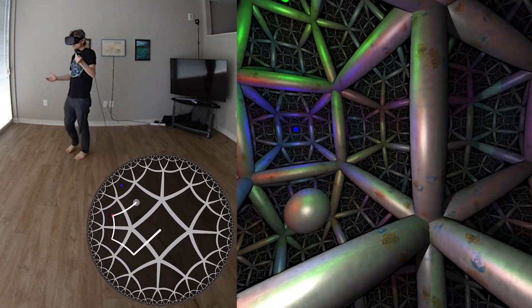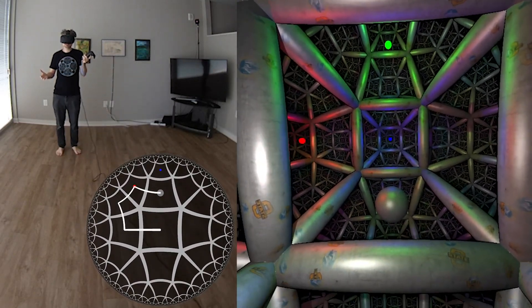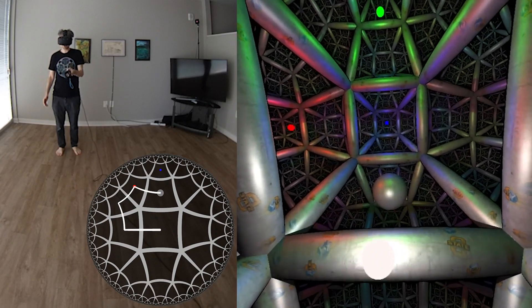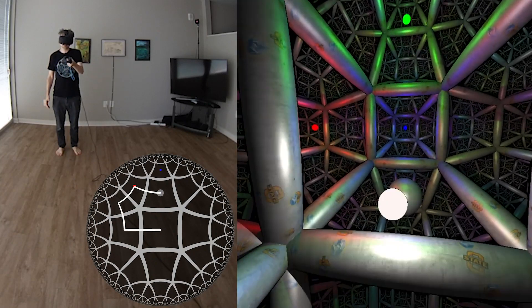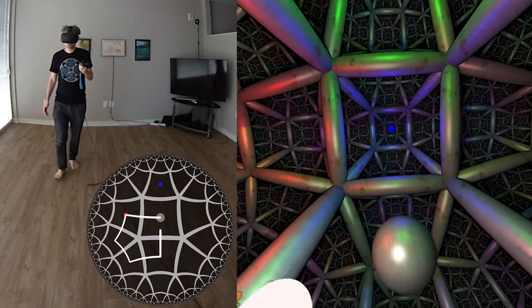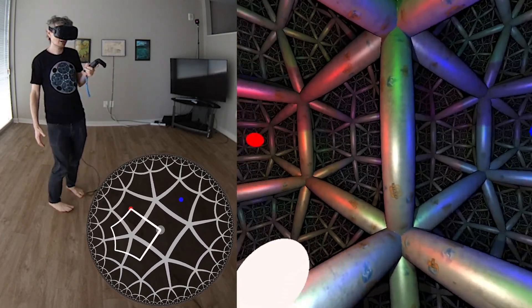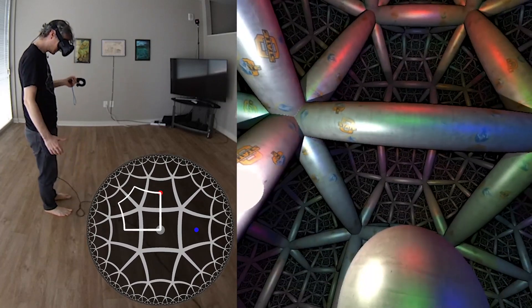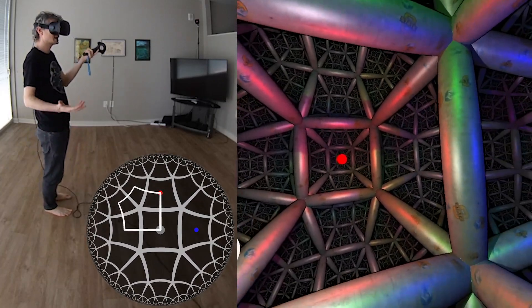So I'm now back where I started in the real world, but you can see that where I started in the virtual world is one cube further in. There's the sphere and there's the red light there. So rather than walking around the sides of a square to get back to where I started, I have to walk around the sides of a right-angled pentagon.